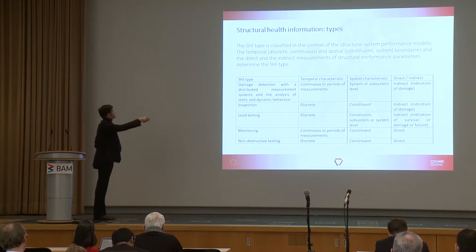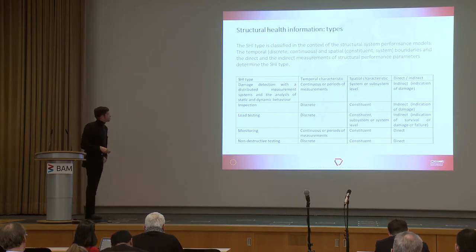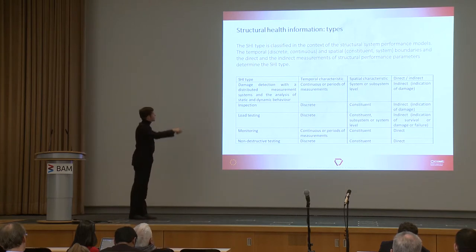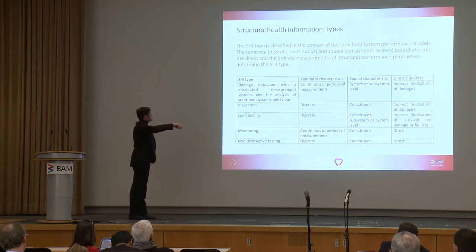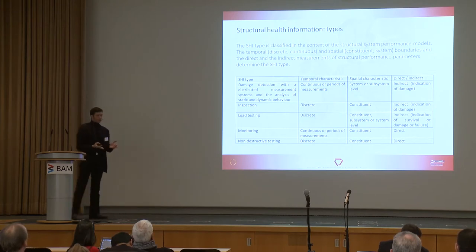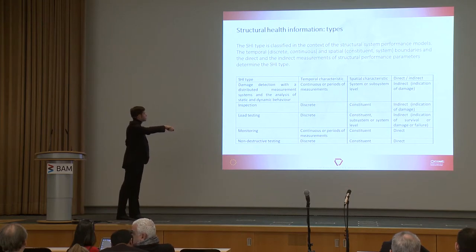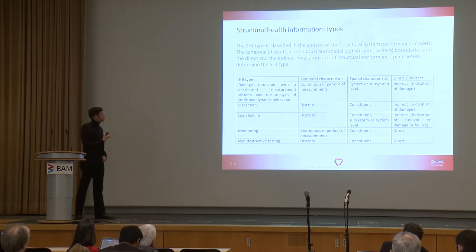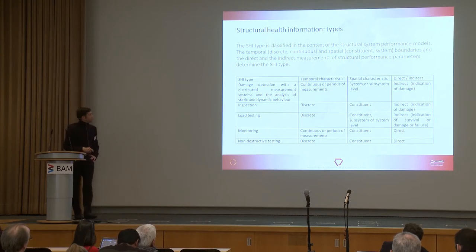How can we classify the types of structural health information? We have had quite some discussions about this. With this guide, we keep it at a very general level. We have temporal characteristics — discrete or continuous, and periods of measurements. We have spatial characteristics — are we at system level, component level, constituent level, or subsystem level? And then, do we have direct information or indirect, indication-type information?